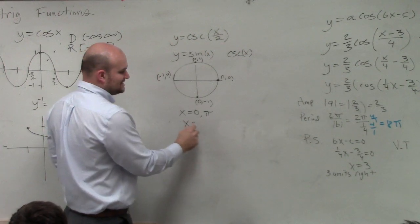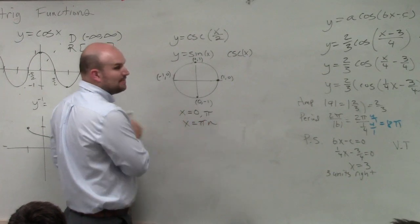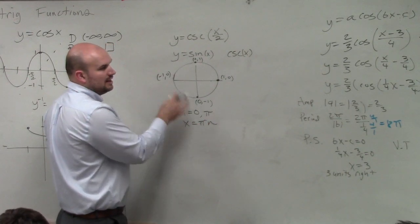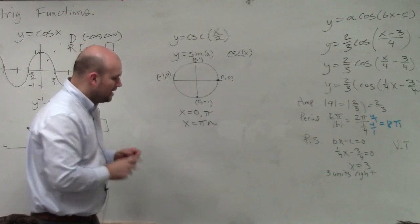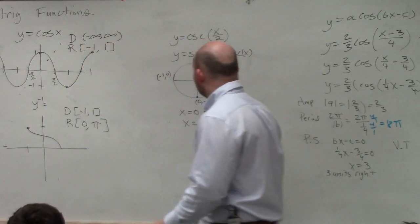So if you remember, we wrote x equals pi n as representing all of the asymptotes, all right? However, there is something that's kind of going on here.